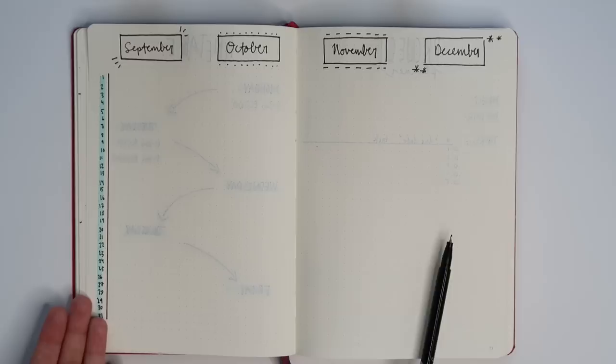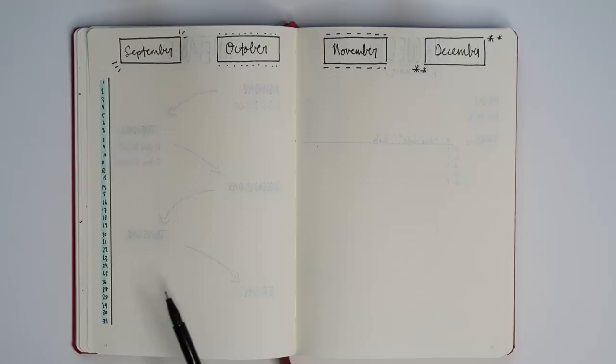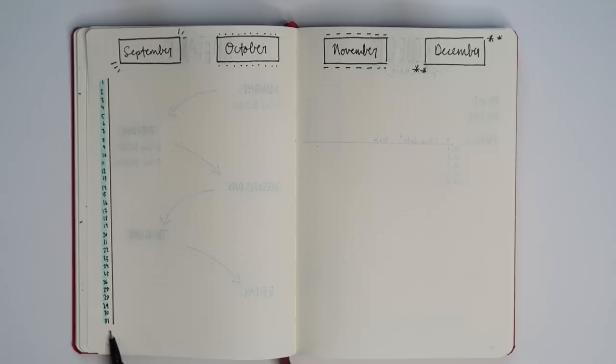To keep this really simple to create I just did one column of numbers for the days of the month. Obviously some months don't have 31 days so you just ignore that spot, and then to distinguish each month I just added some little doodles around the boxes.